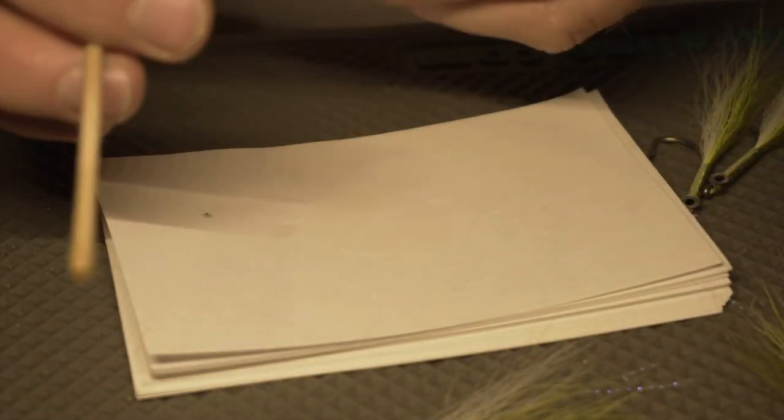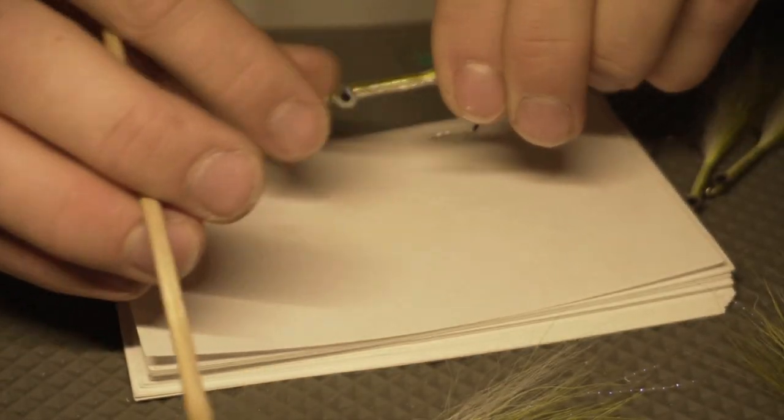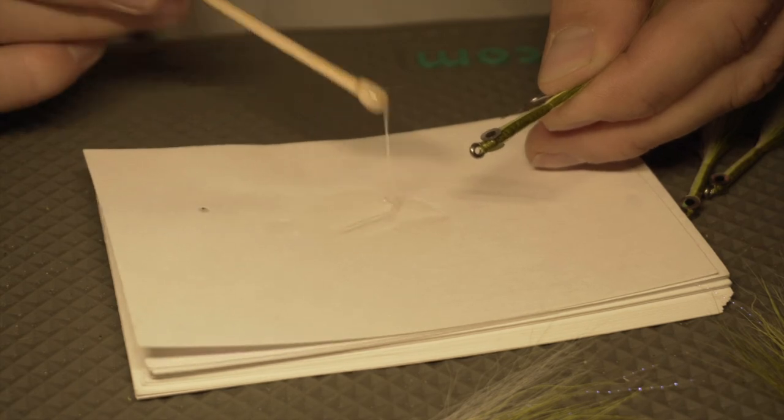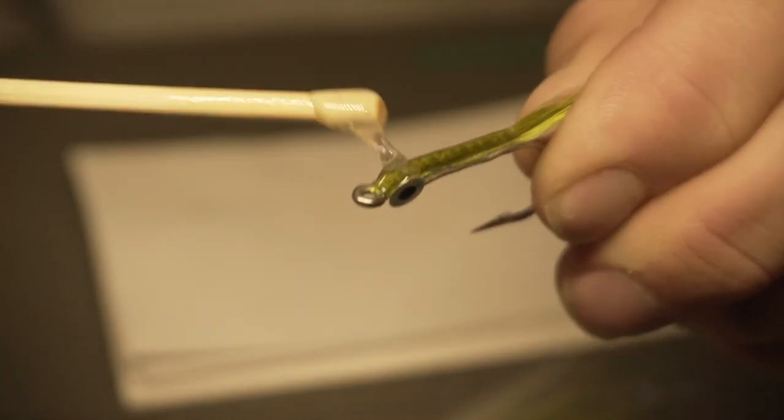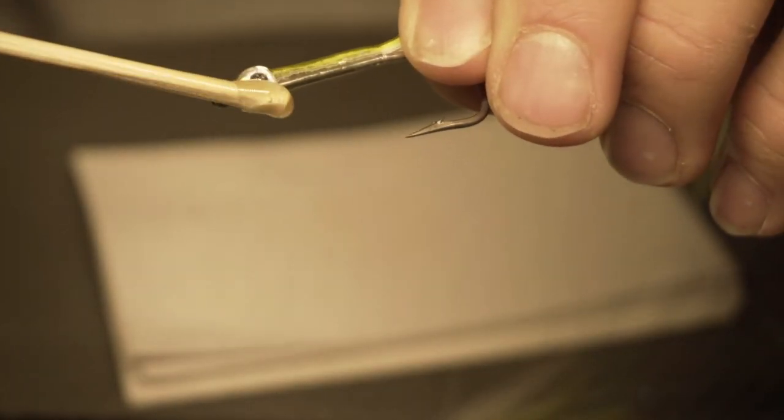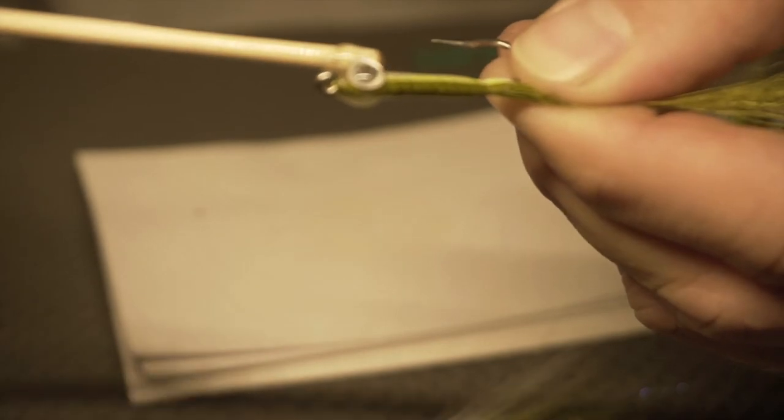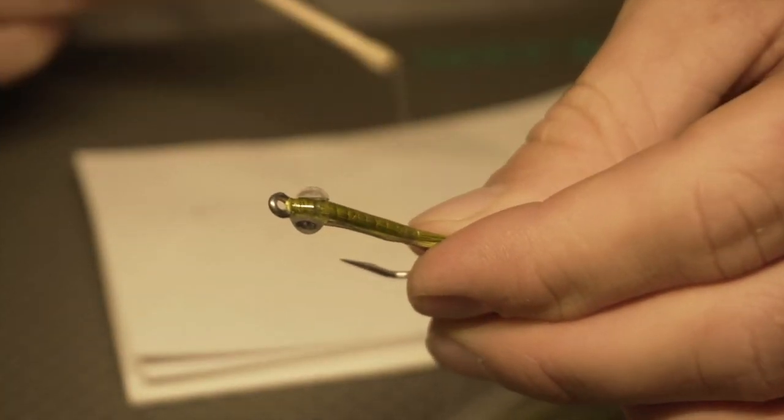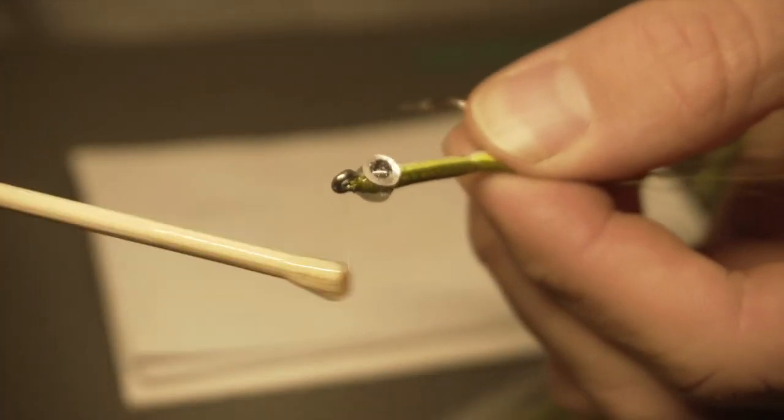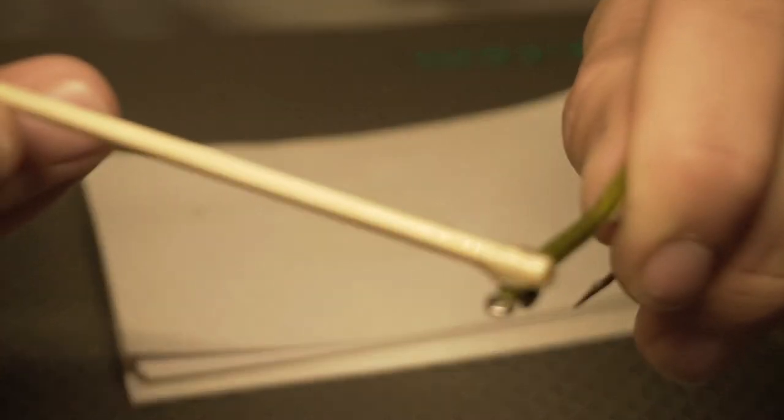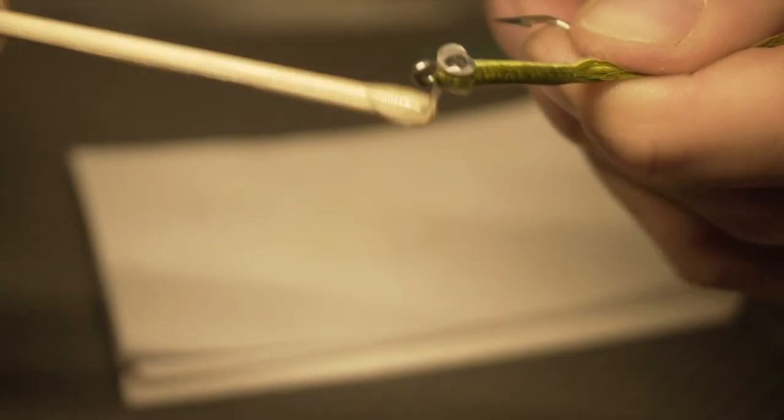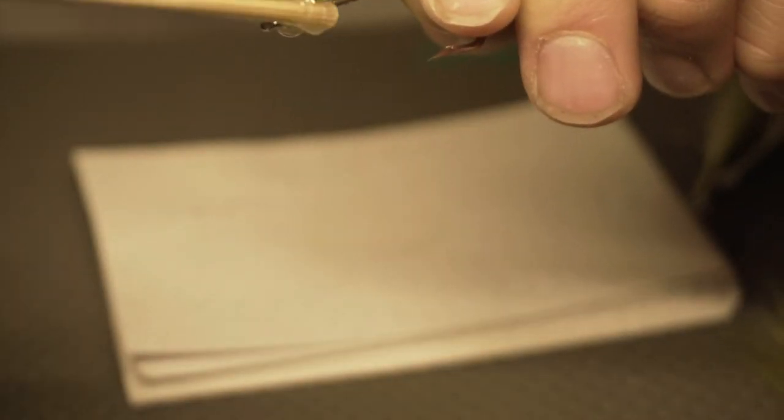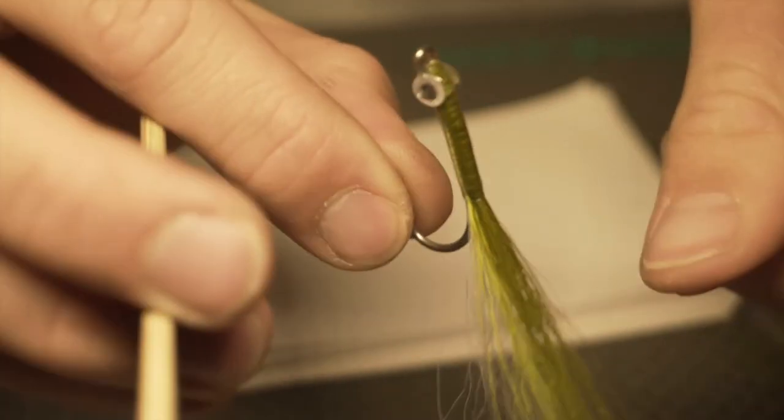Now that your second batch of epoxy is mixed up, we're going to take just a little bit, maybe a split shot size, and dab it on top of the eyes first. Then I bring it down and make sure I'm covering all the areas around the eye. It's basically an improved surf candy - this bubble around the eye makes it visible 360 degrees, which I think is one of the triggers for this fly. Then you throw it on your rotator.